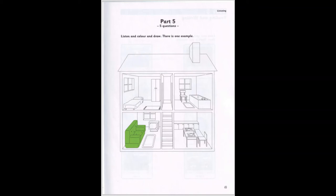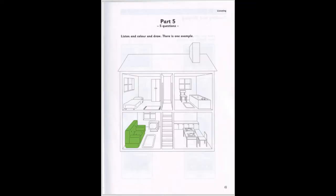Now listen to Part 5 again. Part 5. Look at the picture. Listen and look. There is one example. Can you see the sofa in the living room? Yes, I can see it. Well, colour it green. OK. Can you see the green sofa? This is an example. Now you listen and colour and draw.